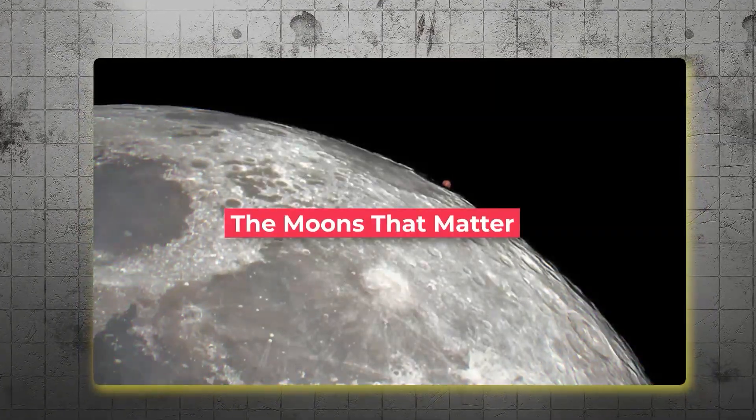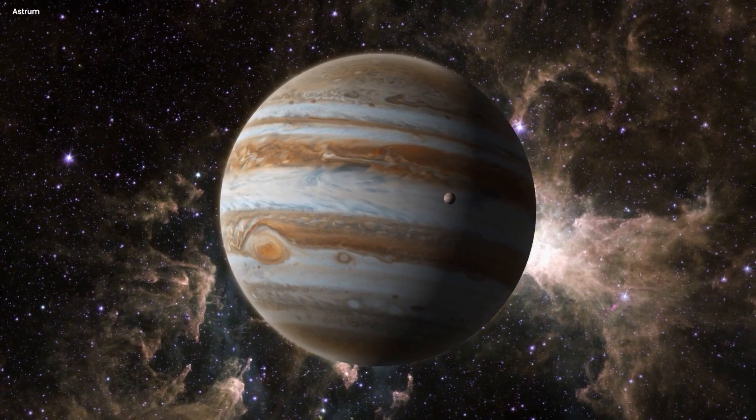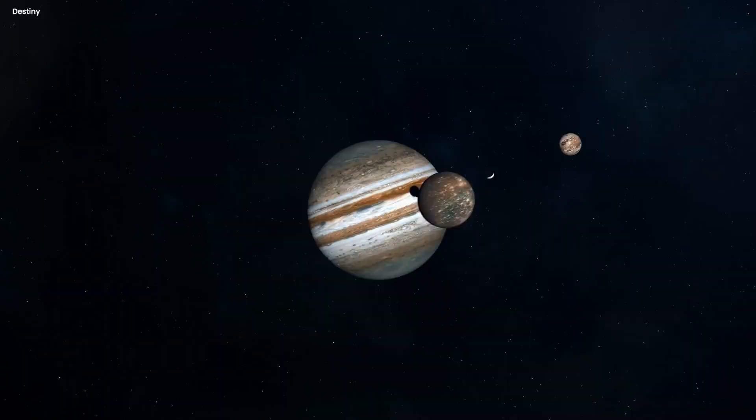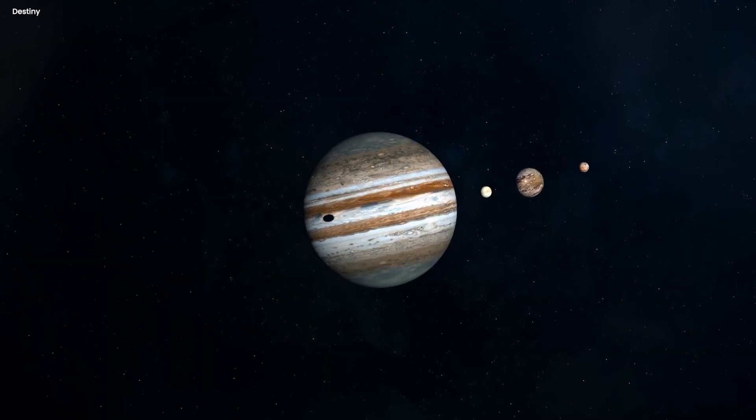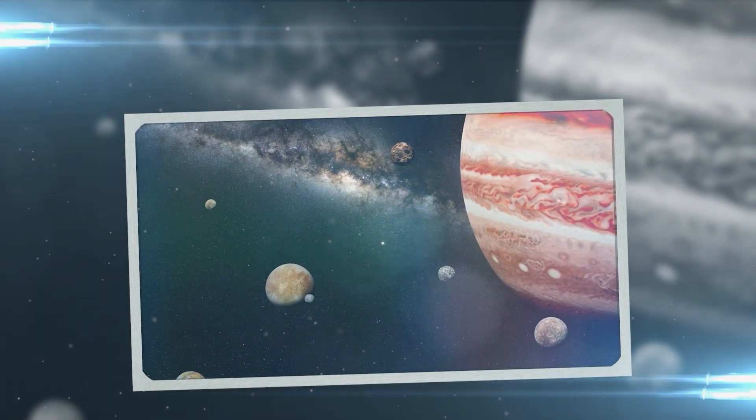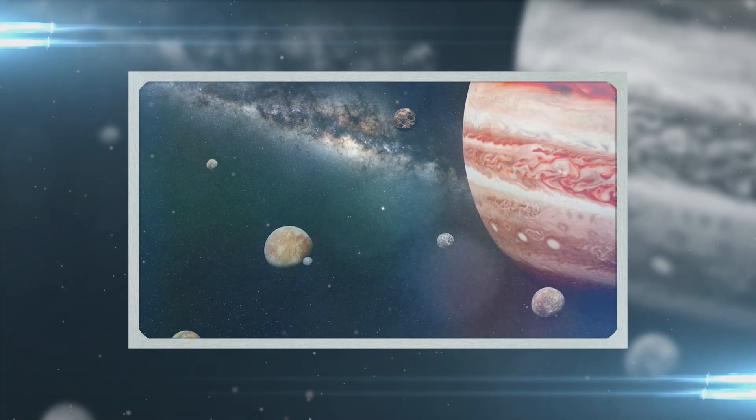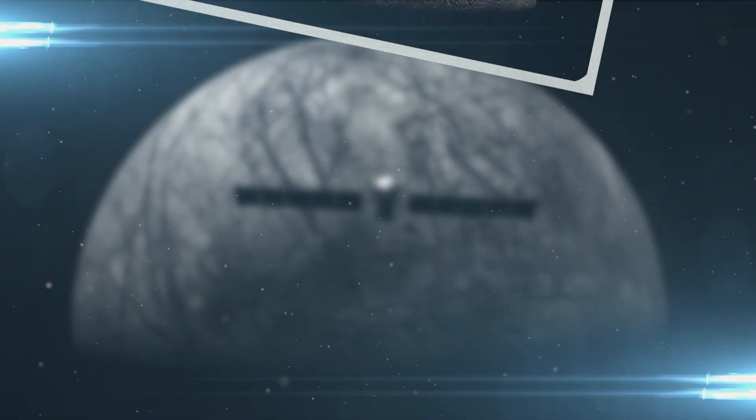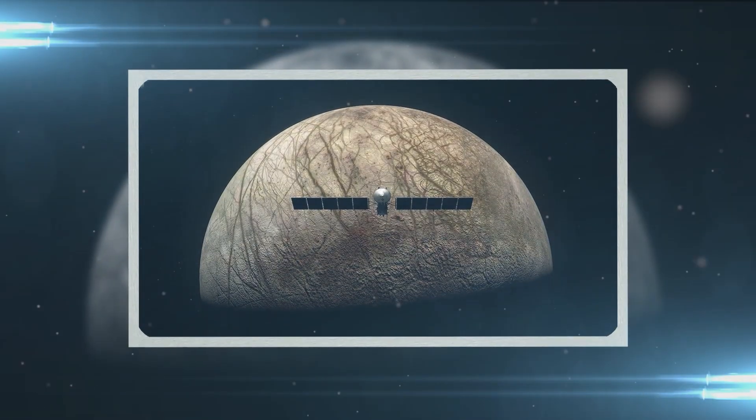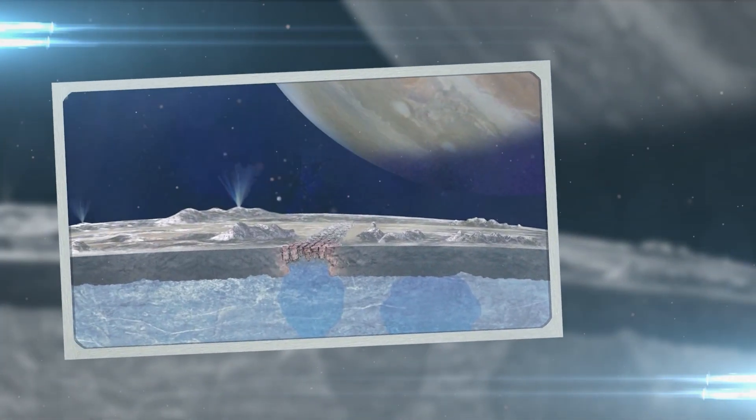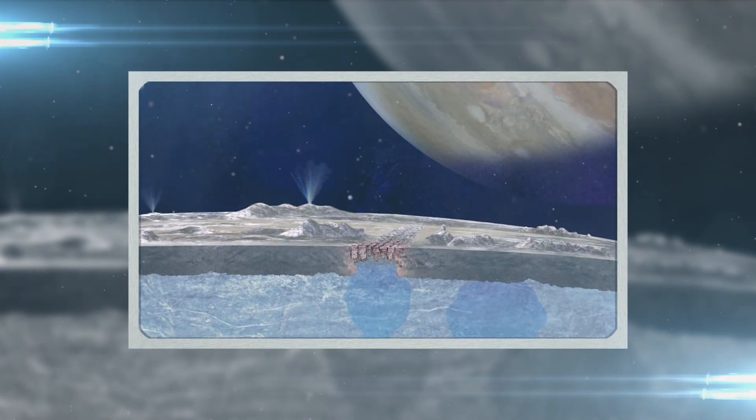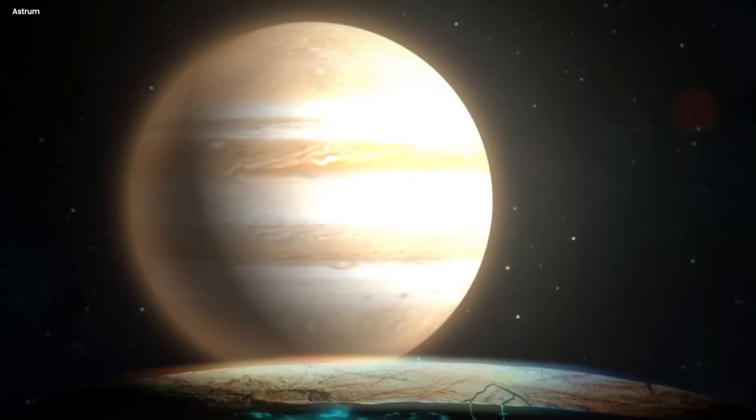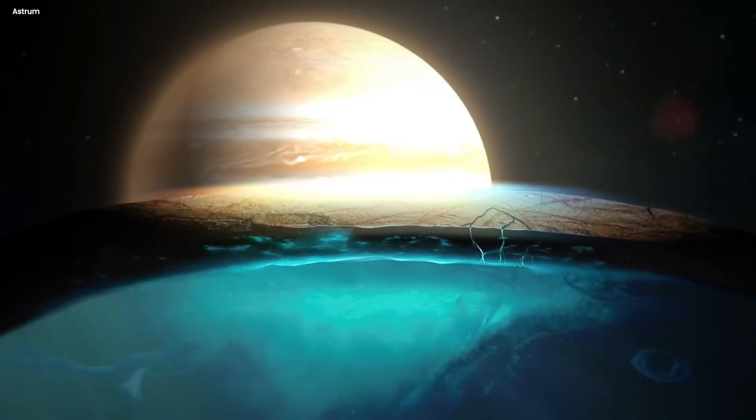The moons that matter. Now, let's talk about what makes Jupiter so interesting beyond just its size. Because it's not just a big ball of gas floating in space. Jupiter has 95 confirmed moons. That's 95 different worlds all orbiting around this one planet. And some of those moons are more interesting than Earth. Take Europa, for example. It's one of Jupiter's four largest moons. And scientists believe that beneath its frozen surface is a global ocean of liquid water. And this isn't just a theory. We have strong evidence from spacecraft observations that Europa's ocean is real. And that it contains more water than all of Earth's oceans combined.